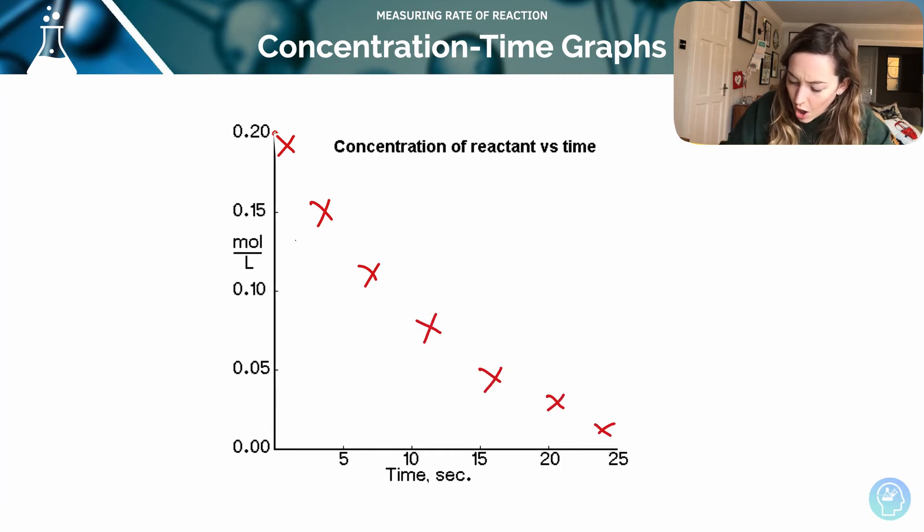I'll draw my line of best fit following that pattern down. From this, because I've got time on my x-axis, I can work out the change in the concentration of the reactant over time. That can give us the rate of reaction. So let's say I want to work out the rate at t equals 10.